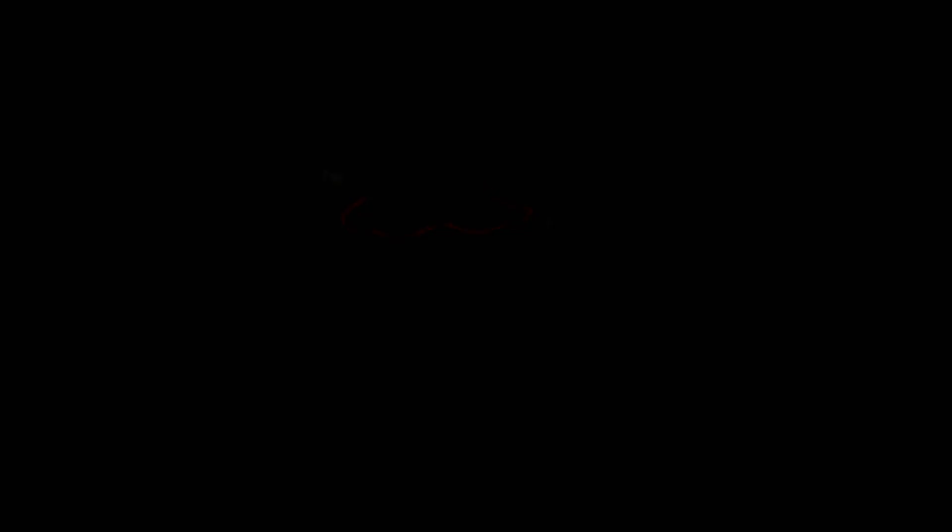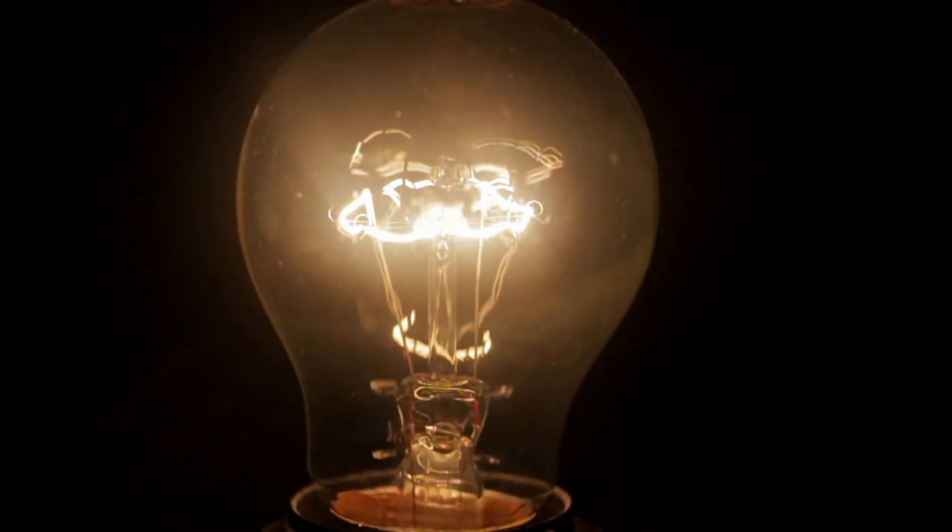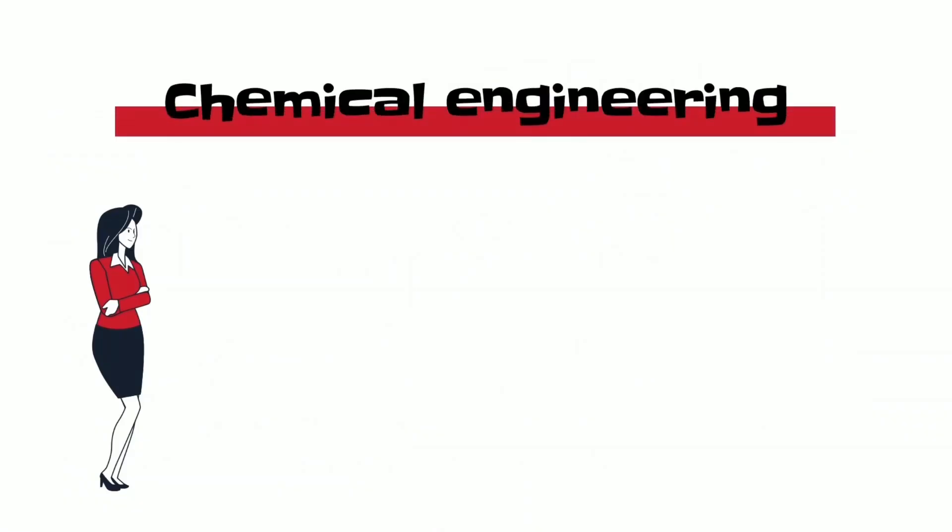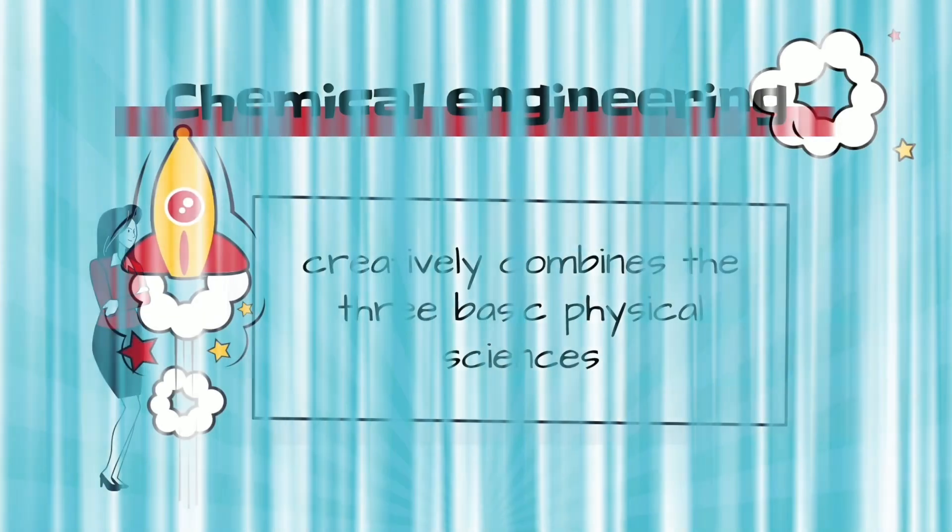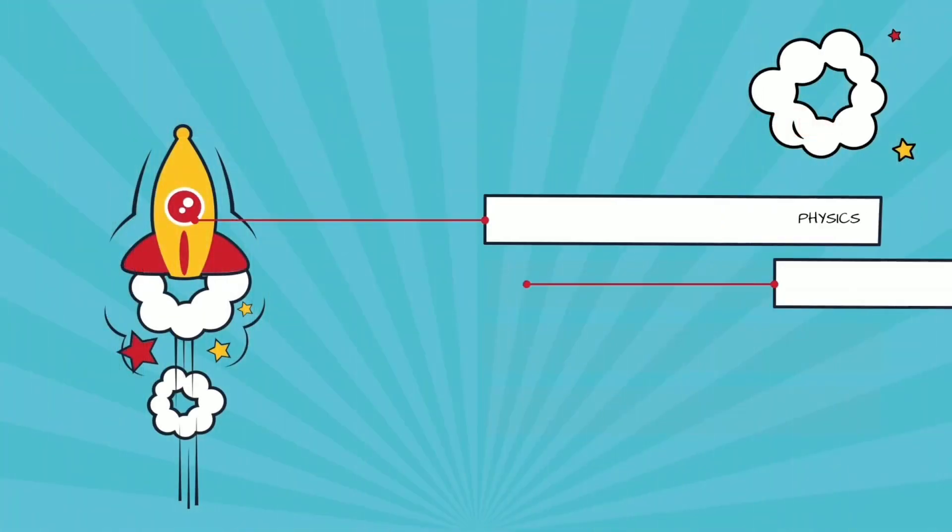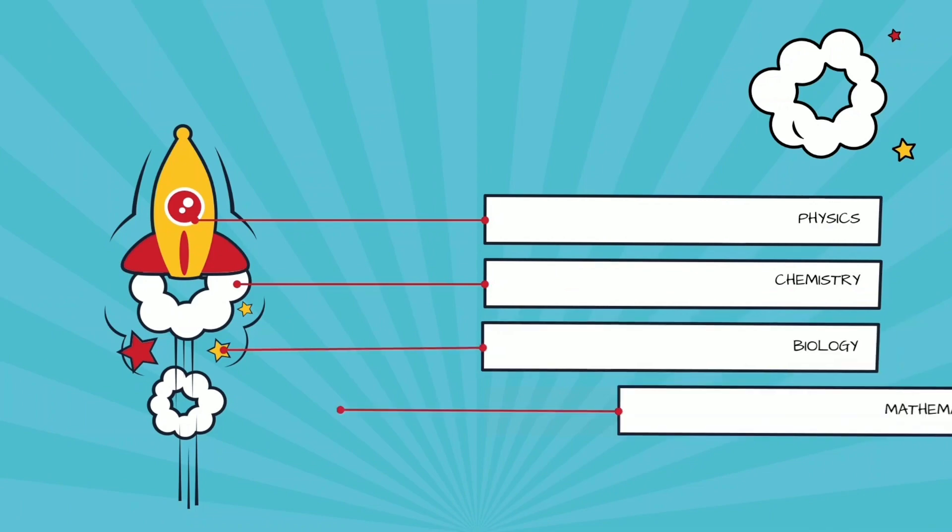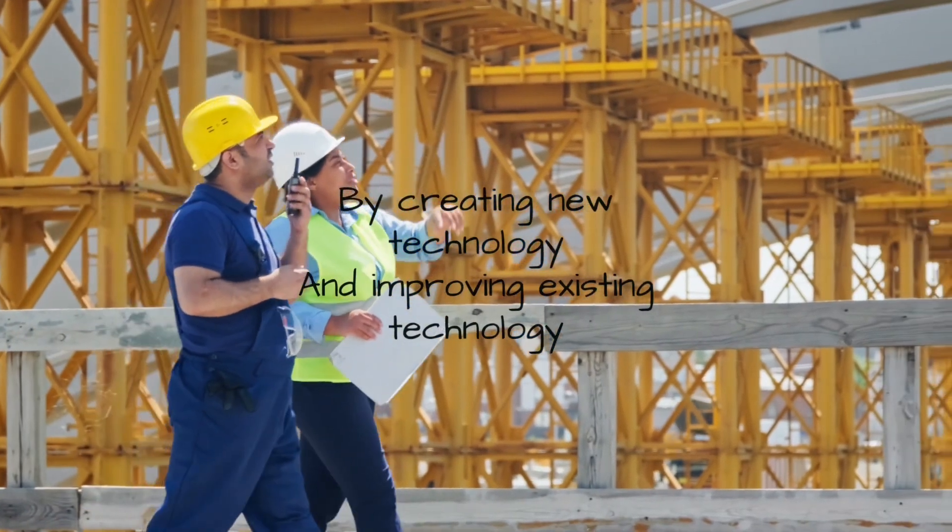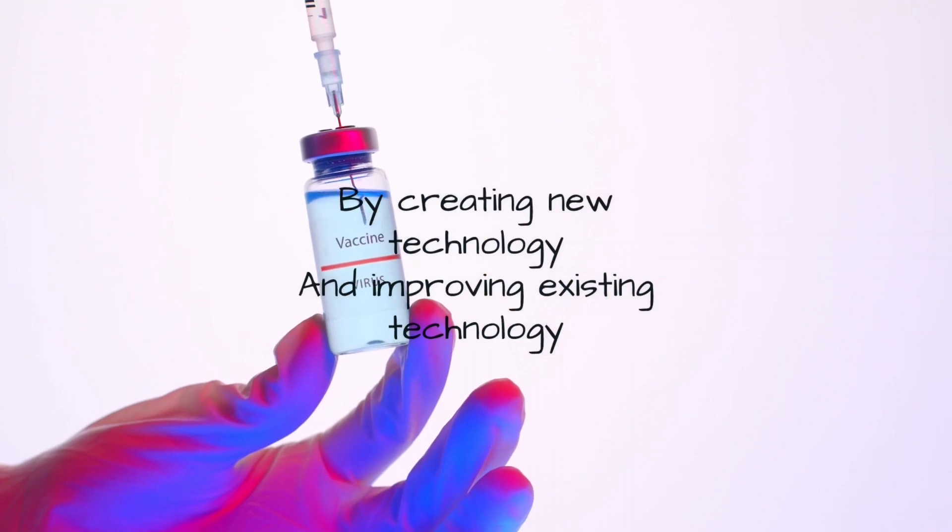No worries, let us answer your doubts. What is chemical engineering? Chemical engineering creatively combines the three basic physical sciences - physics, chemistry, and biology - along with mathematics to address the world's needs by creating new technology and improving existing technology.